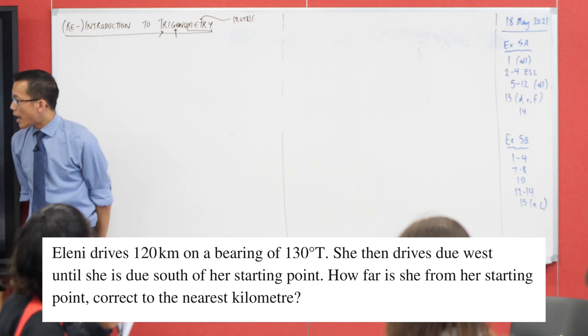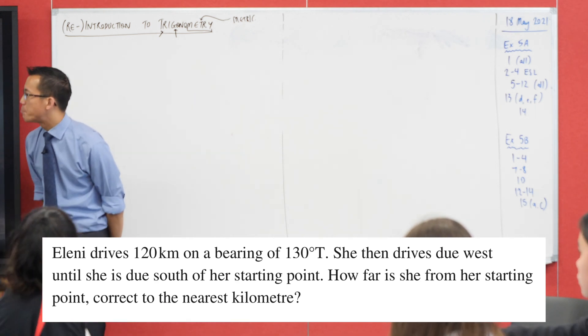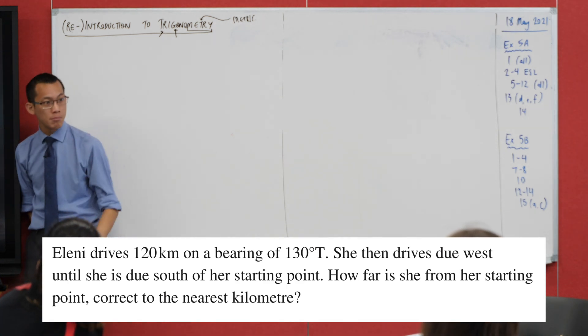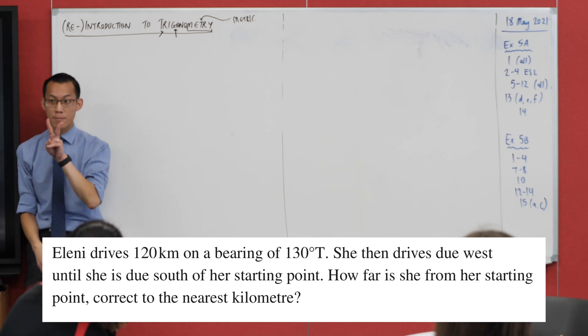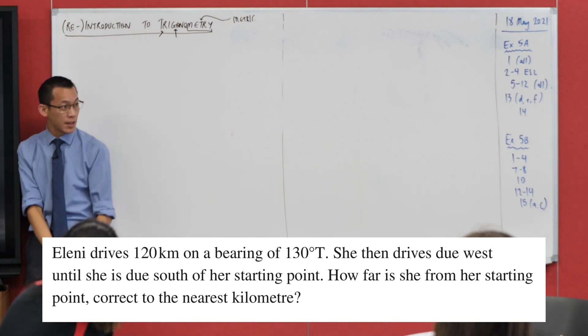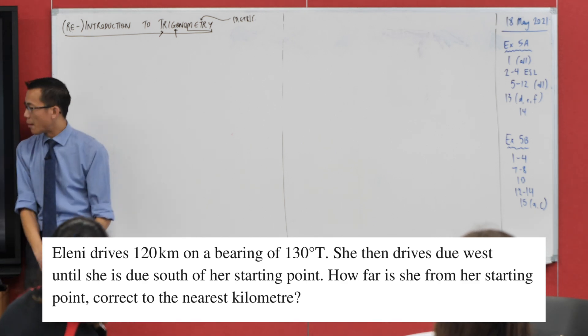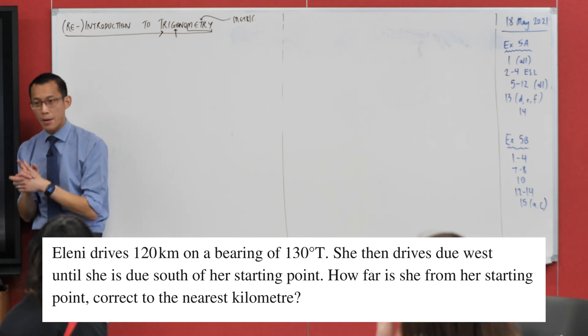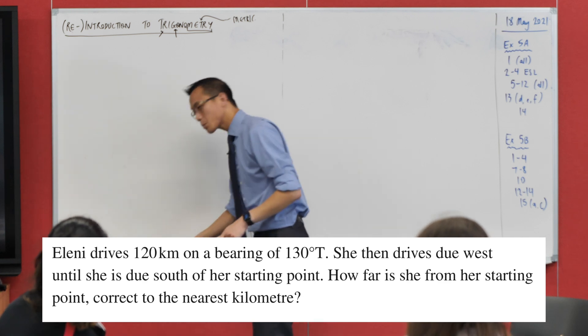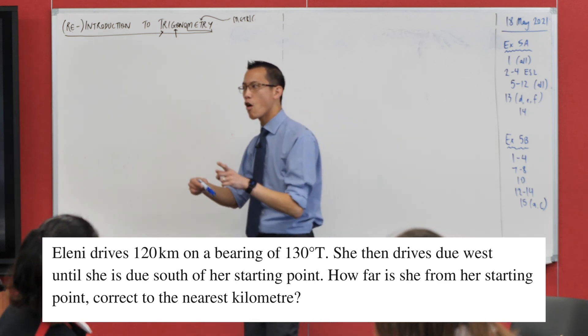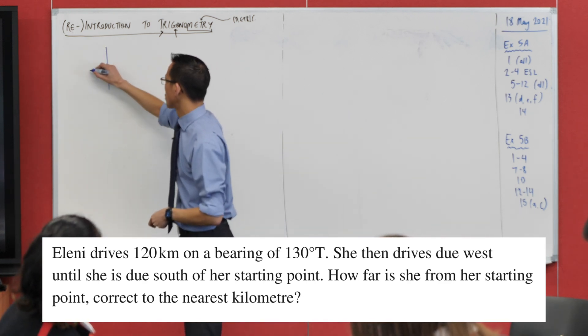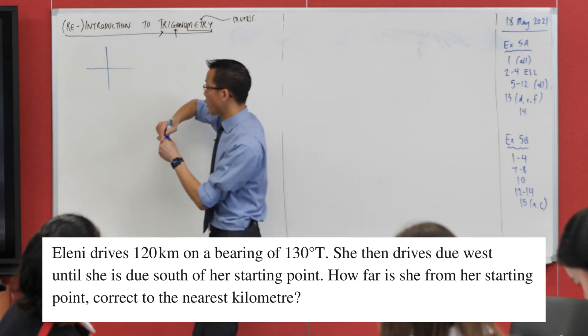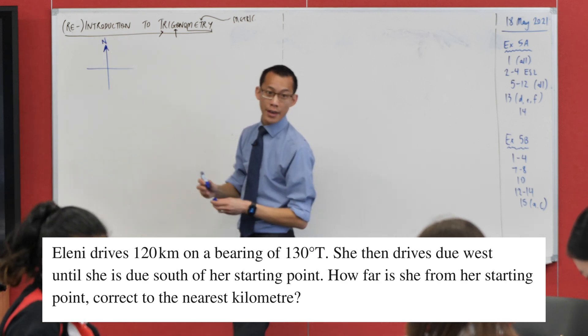Eleni drives 120km on a bearing of, and then you see this, this is the first roadblock, right? If you haven't done bearings for a little while, there's generally two ways to represent bearings. This one, what's the T stand for? True, right? Sometimes also called three-figure bearings but I think true is a more helpful way to say it. A true bearing, pick up your pen, a true bearing is measured from where? If I drew like a little compass here, where do I measure from? Yeah, from north, so let's go ahead on your little compass there, let's start by having north in there.